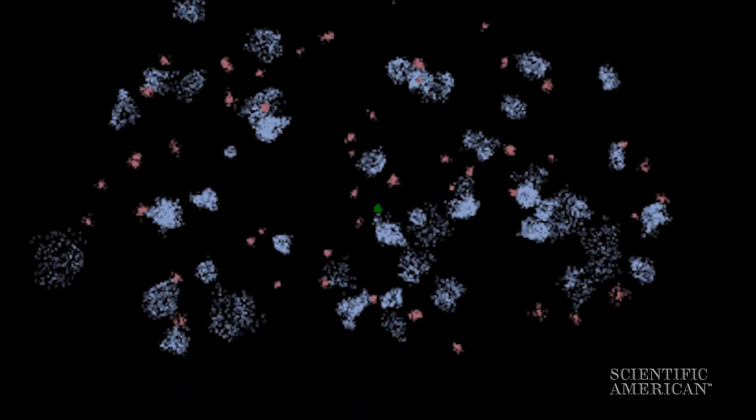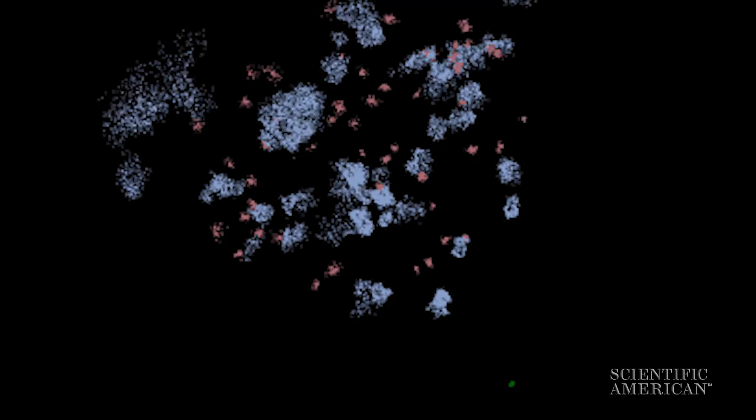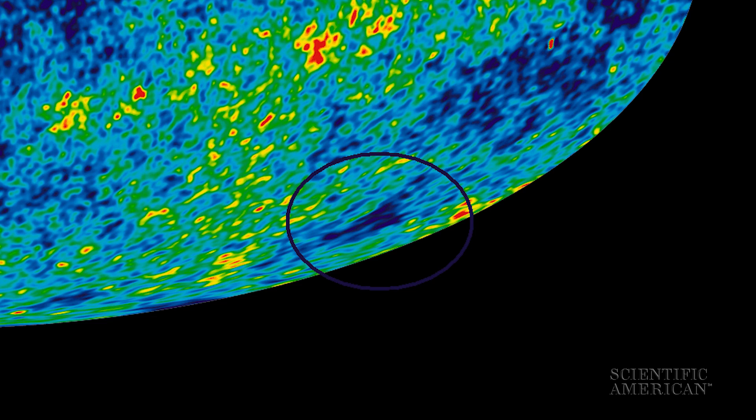Now astronomers say they've found in the same part of space a so-called supervoid, a large area mostly empty of galaxies. And they think the overlap is no coincidence.